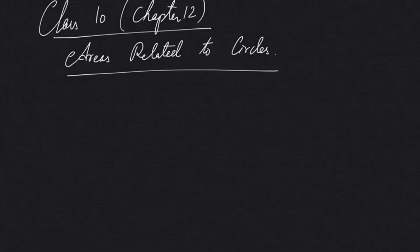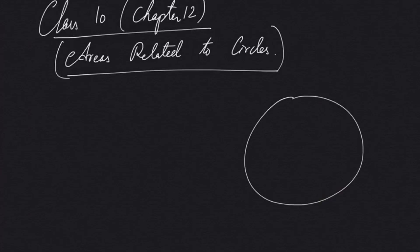Let's do some problems on Class 10. Today I'll start with Chapter 12 of Class 10 NCERT and the board of school education textbooks. The name of the chapter is Chapter 12: Areas Related to Circles. Before that, let's see what a circle is and review some basic terms related to circles.